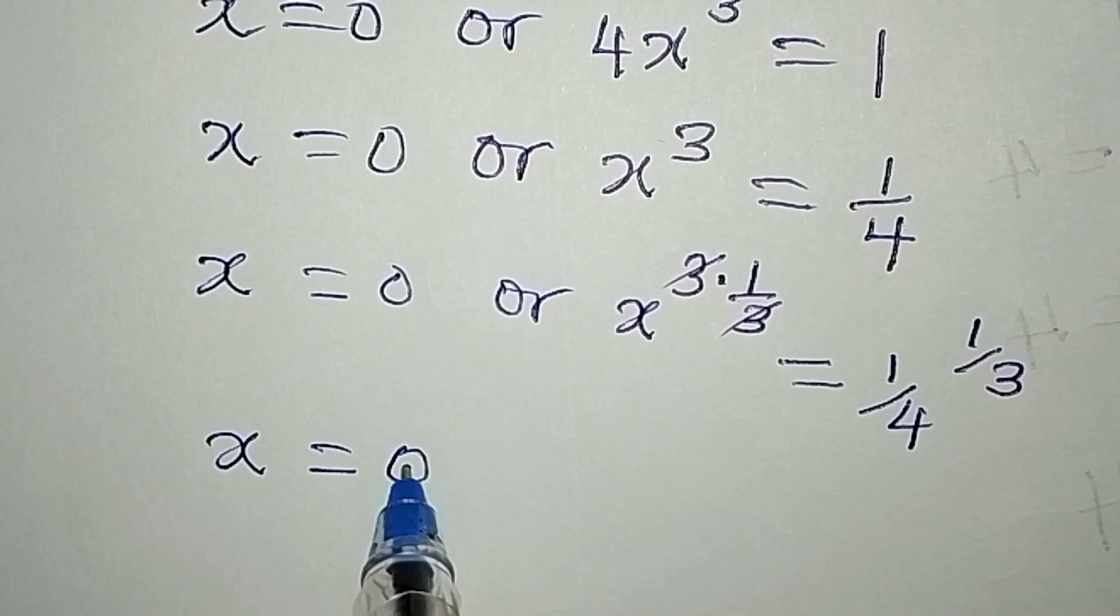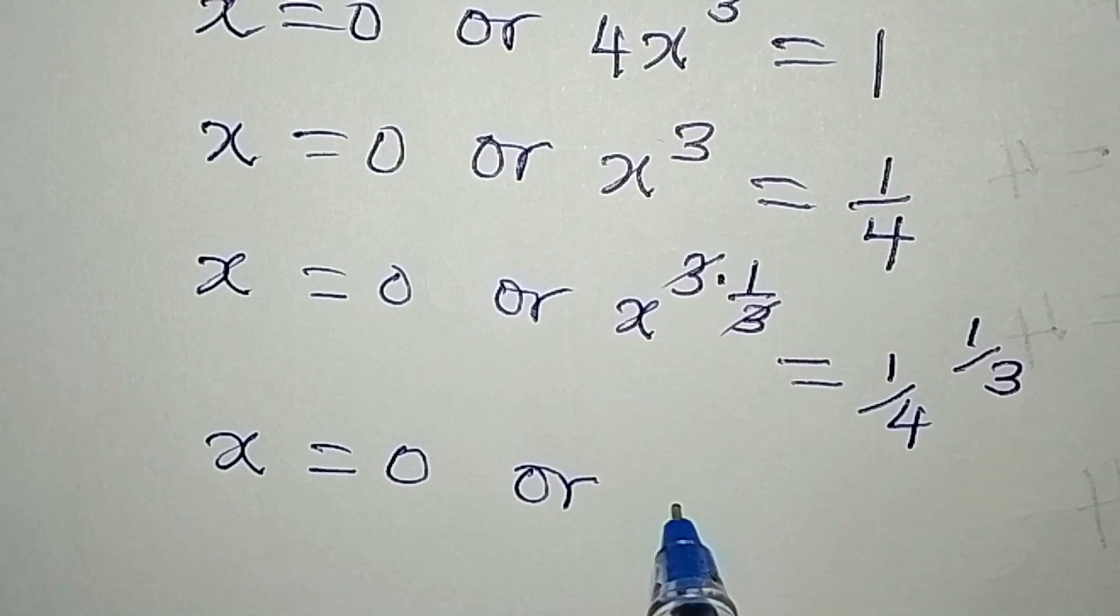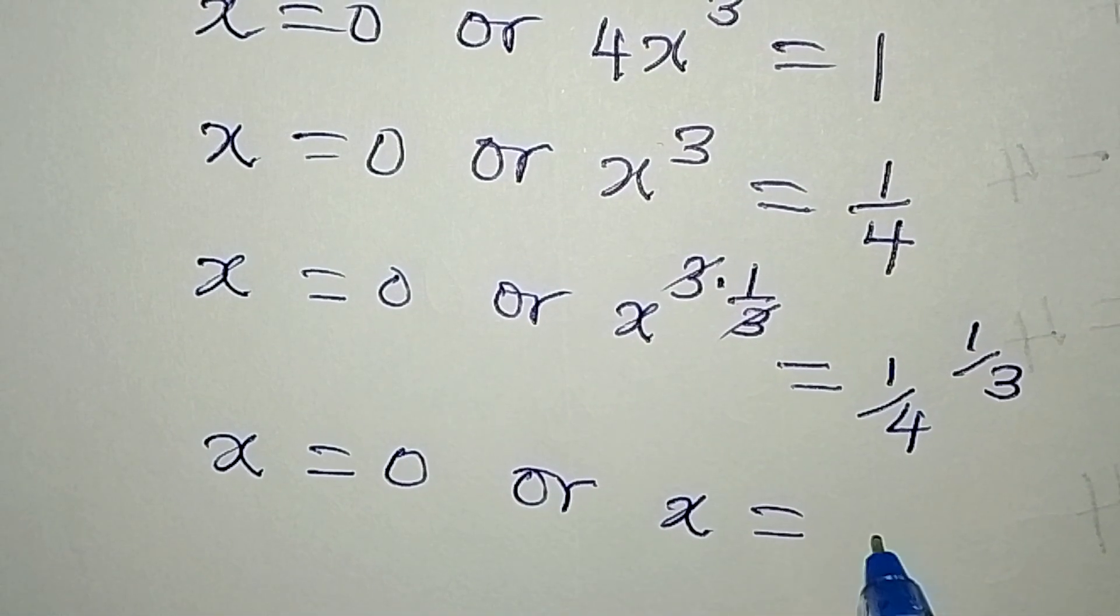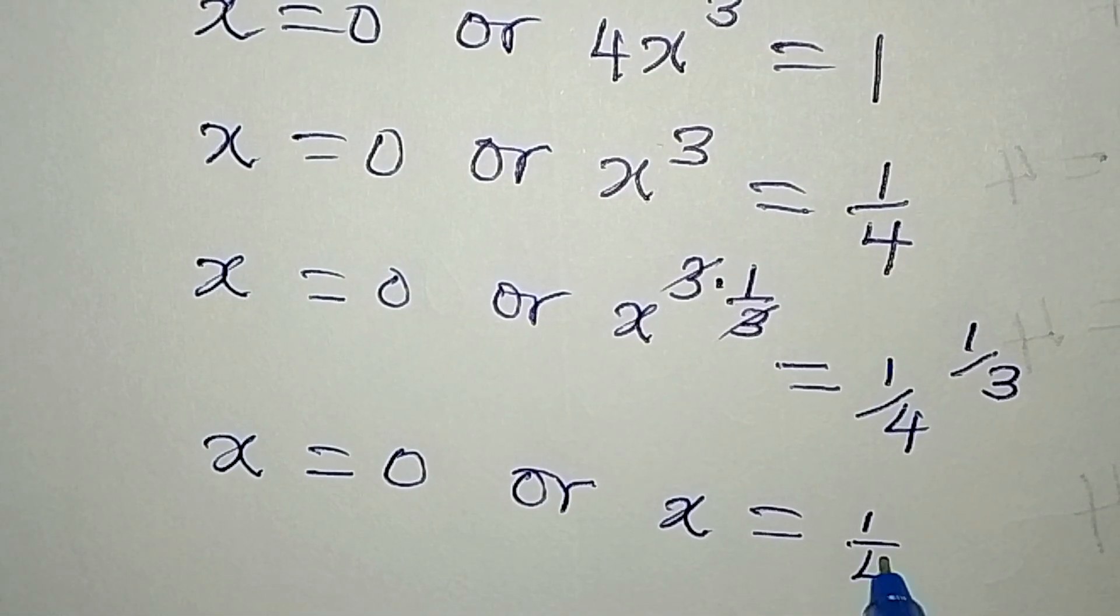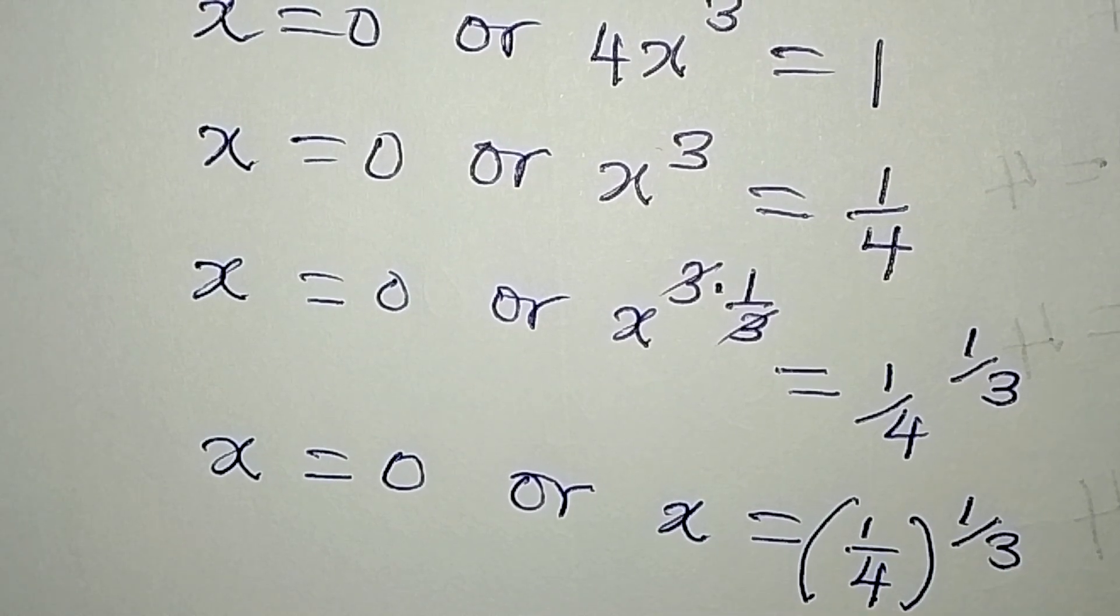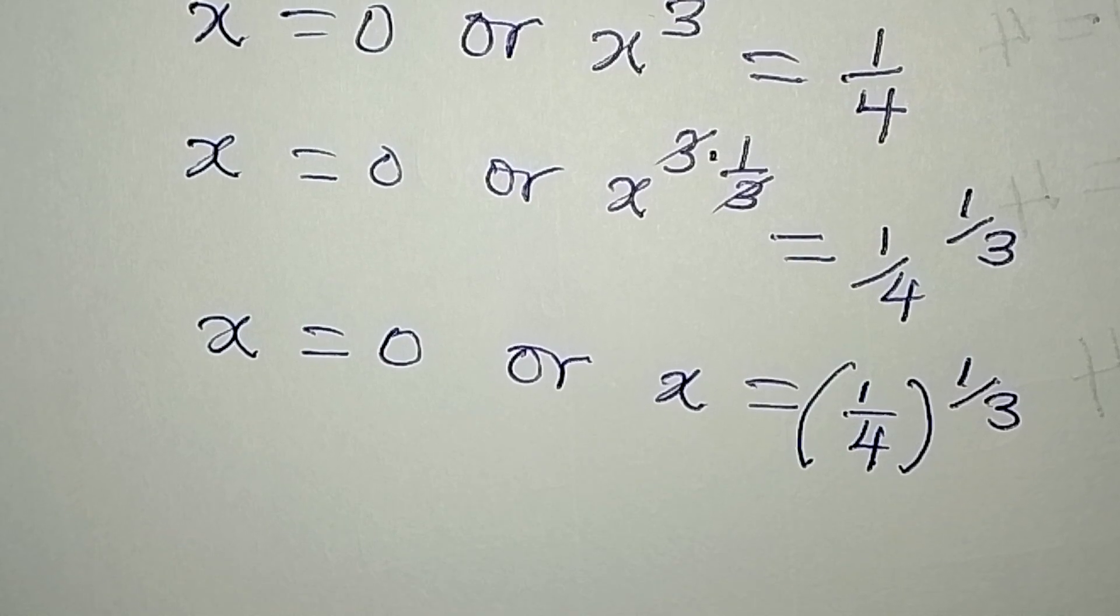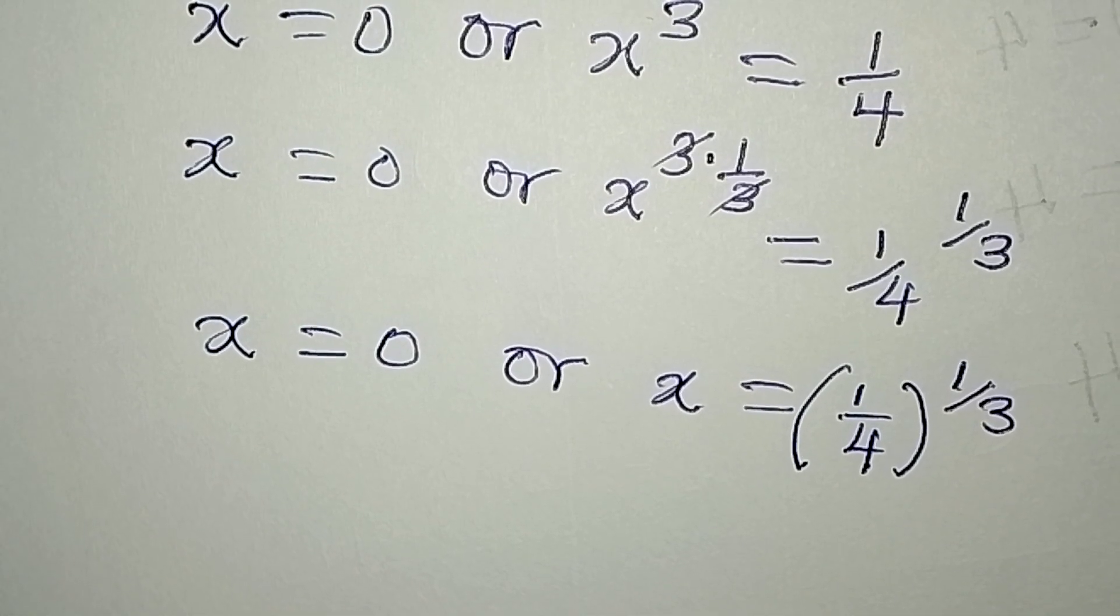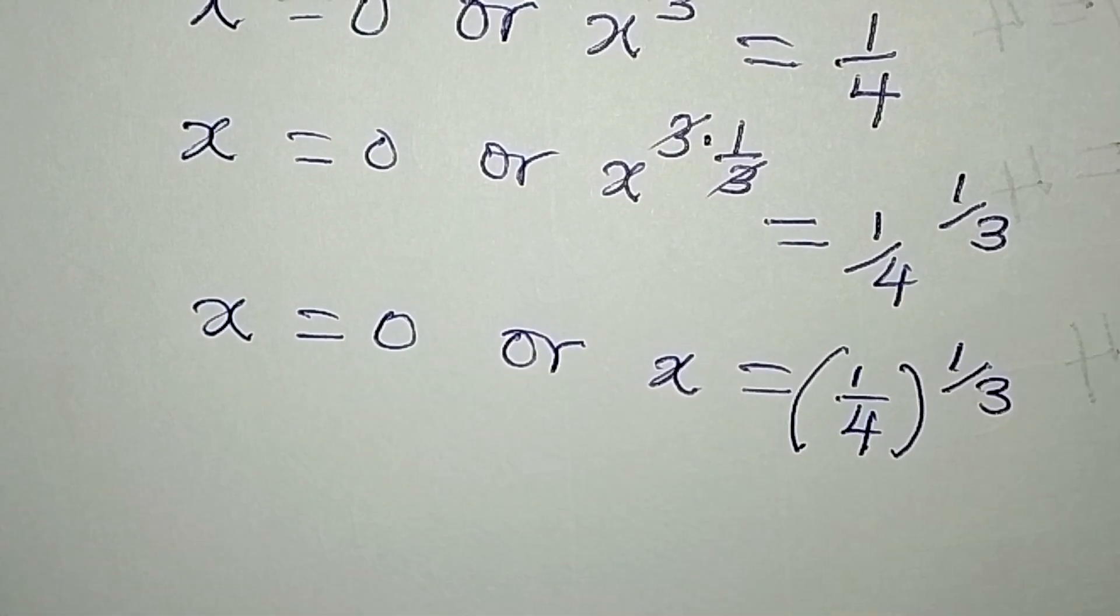So from here we have x equal to 0, or x on the other side equal to 1 over 4 to the power of 1 over 3. So you can decide to stop over here and then call this your final solution.